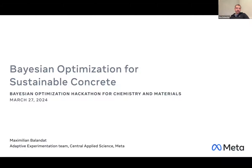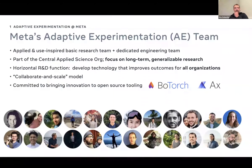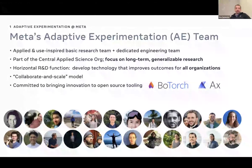I'm Max. I support a research team at Meta — the modeling optimization part of the adaptive experimentation team. We've been at this for a while. I'll give a brief intro to Bayesian optimization. I have a little bit of a last-mover advantage here because Taylor already went over this, so I can breeze through and then spend more time on the main part of the talk, and also cover the tools that we build and maintain.